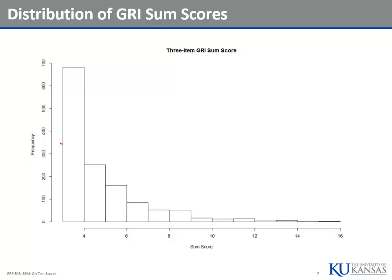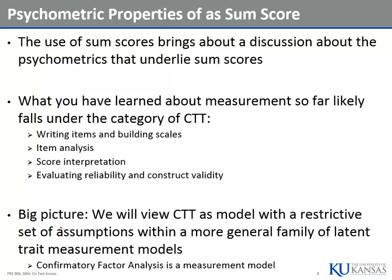Here's our sum score distribution — look at that. Most people strongly disagree with anything to do with gambling. The use of a sum score brings about a discussion of the psychometrics underlying sum scores. What you've learned in measurement likely falls into the category of classical test theory, with the exception of CFA. That involves writing and building scales, item analysis, score interpretation, evaluating reliability, and construct validity.